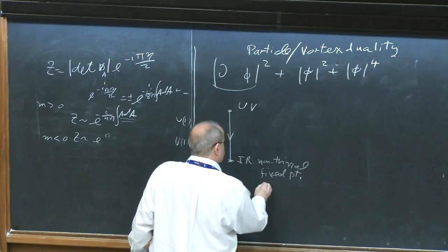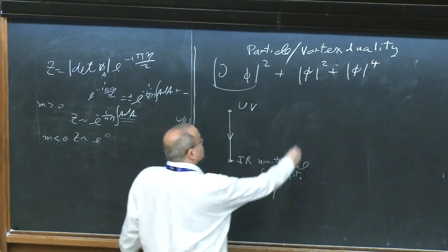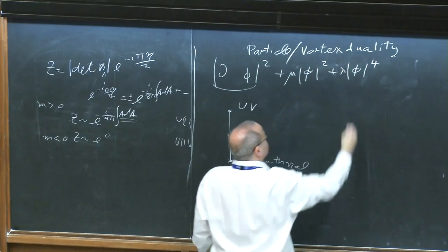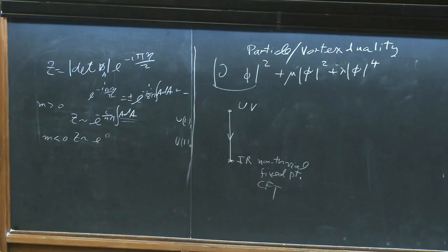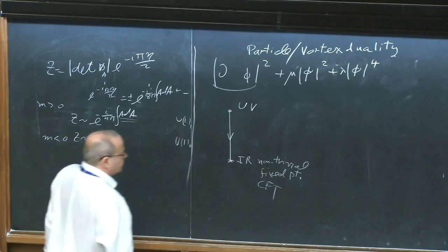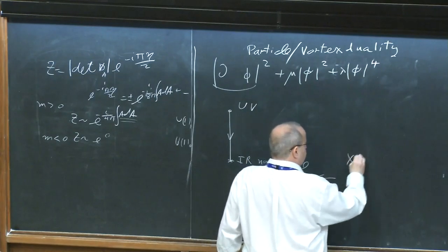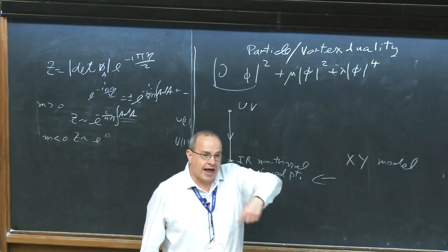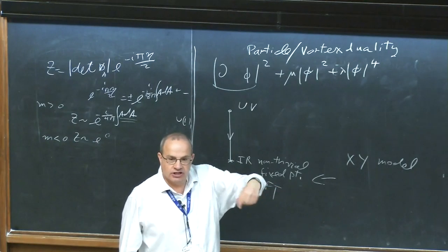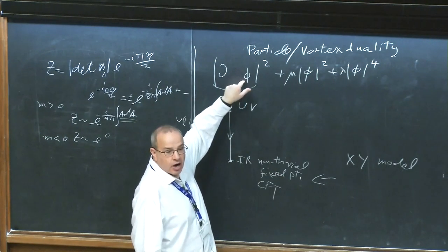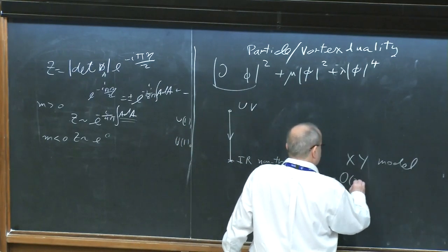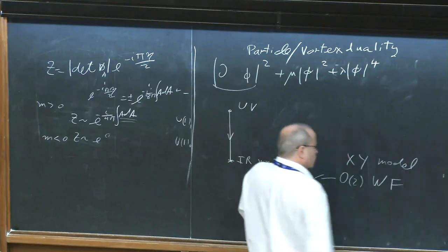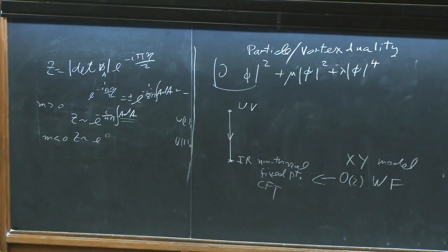It's also known as a CFT — a conformal field theory. This model, since phi is a complex field, is known as the XY model, because in the lattice description we have an angle at each lattice site which is really the argument of phi. Another name for this model is the O2 Wilson-Fisher fixed point, named in honor of Wilson and Fisher who studied that model. It flows to a non-trivial fixed point which has a global U1 symmetry.